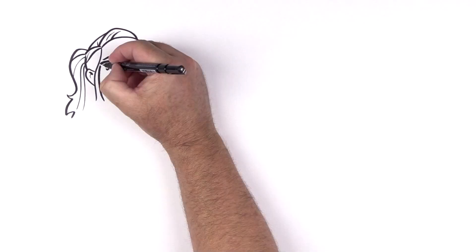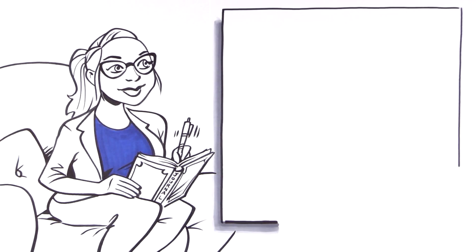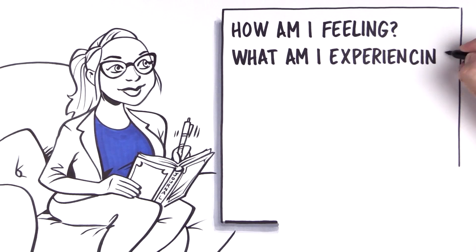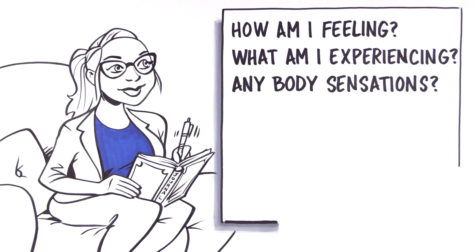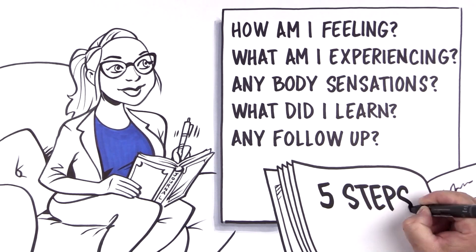And then the last step is reflect. Do a self-check. Going right back to the first step, seeing how you're doing, how are you feeling, what are your emotions, thoughts, and bodily sensations, and what did you learn? Any follow-up steps that you could take? And what could you do next time the situation occurs? Thinking ahead.